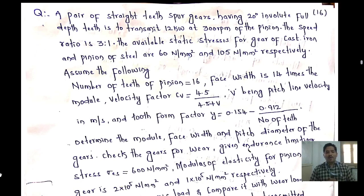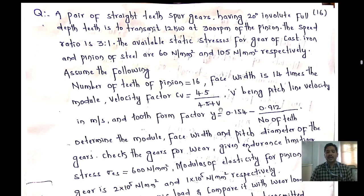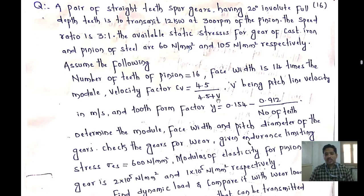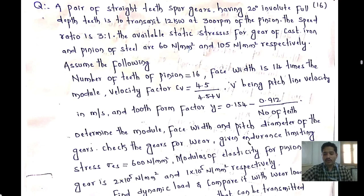In this problem we need to assume some values. The number of teeth of the pinion is given as 16, and face width is given as 14 times the module. The velocity factor CV = 4.5 / (4.5 + V), where V is the pitch line velocity measured in meters per second.